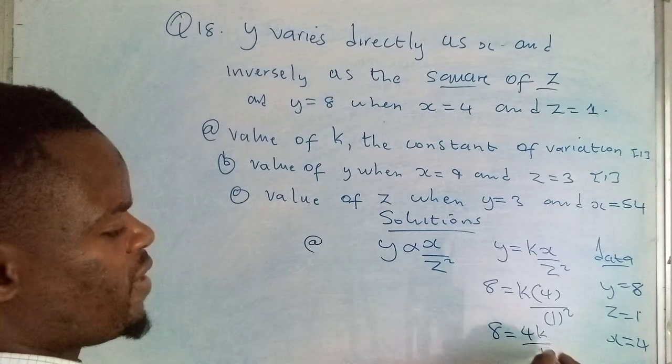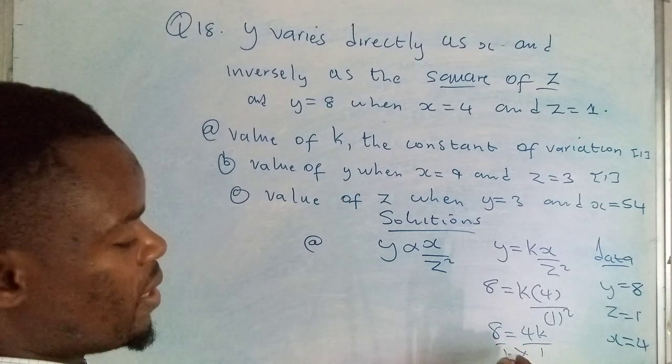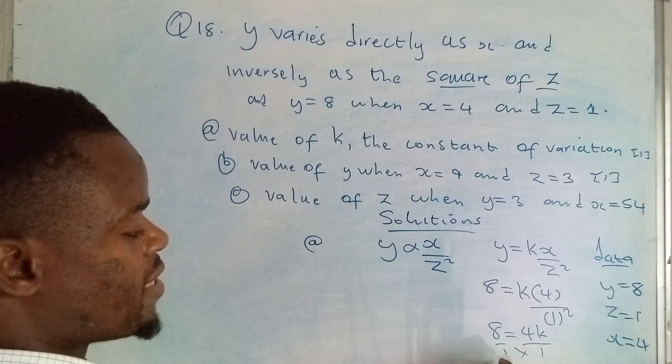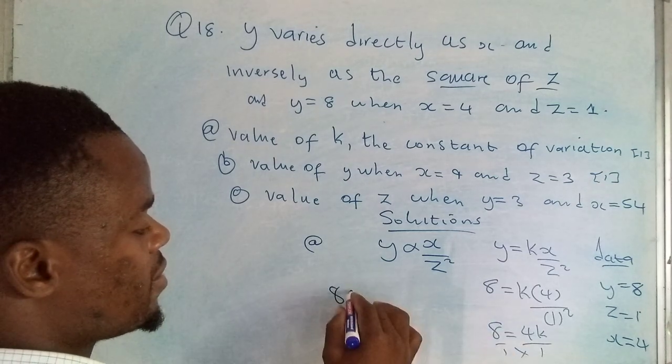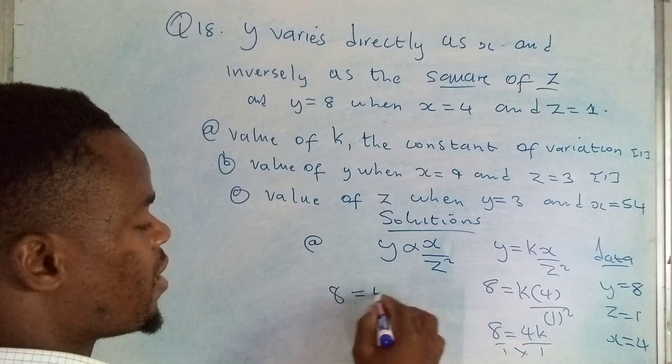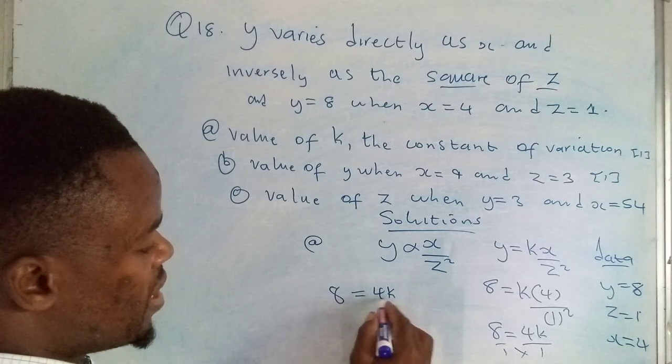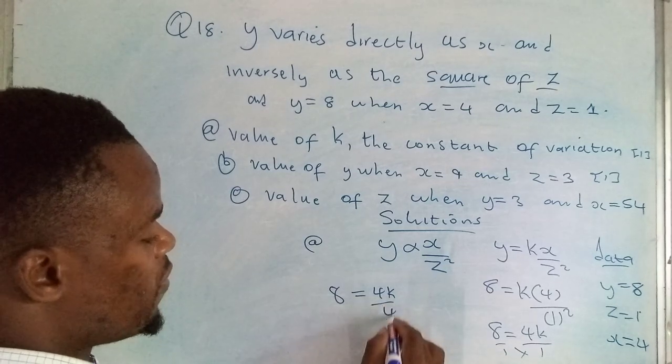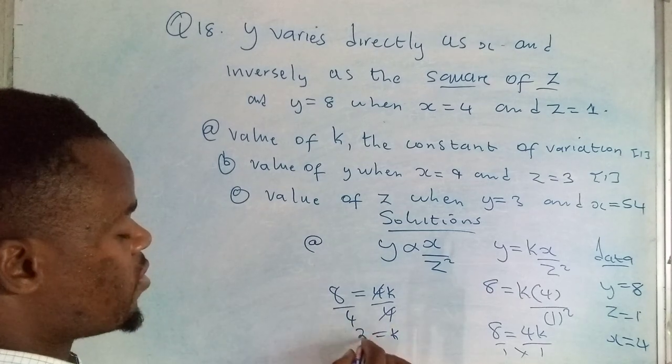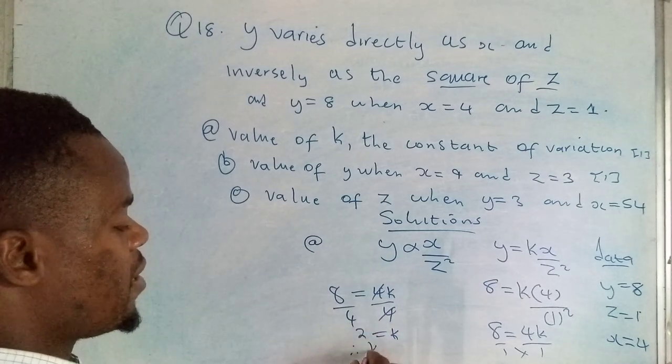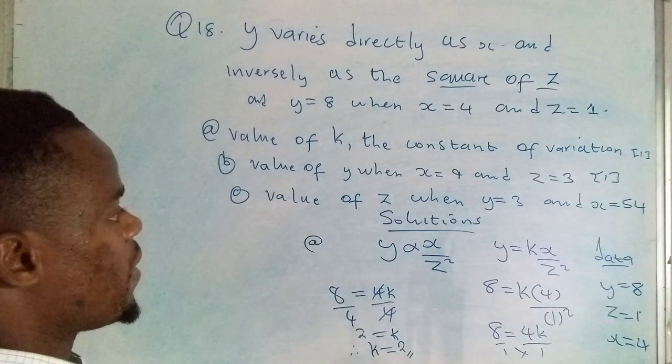We can divide 1 into that or cross multiply by introducing 1 this side. 1 times 8, that's 8, which is equal to 1 times 4k, that's 4k. Our interest is to find the value of the constant of variation which is k. We divide both sides by 4. Therefore k is equal to 2. The constant of variation k is equal to 2.